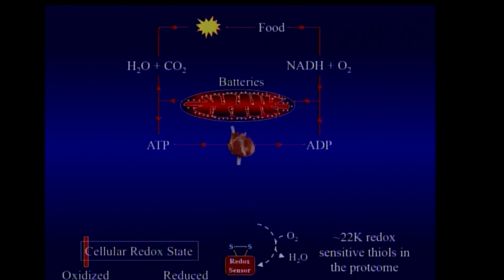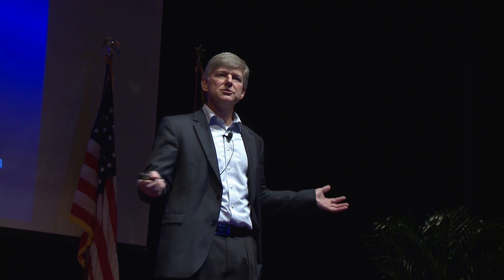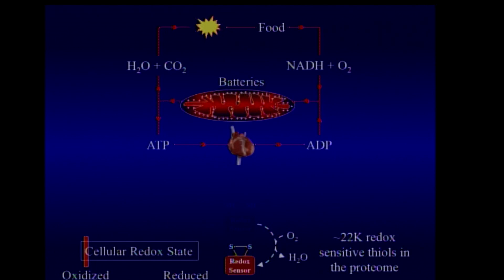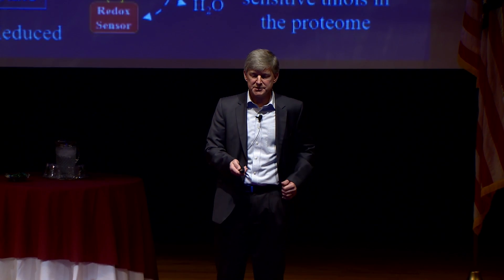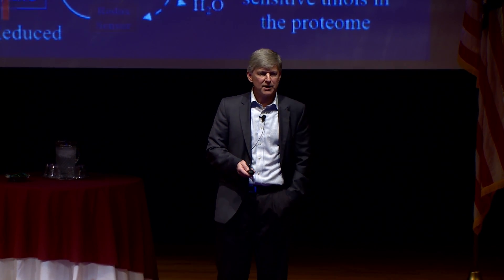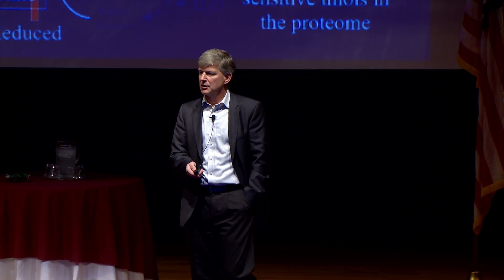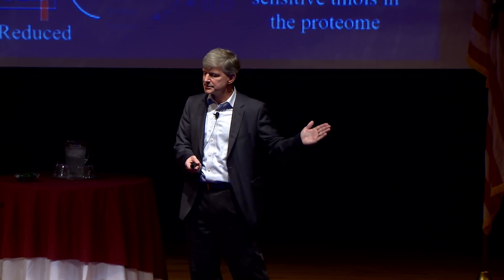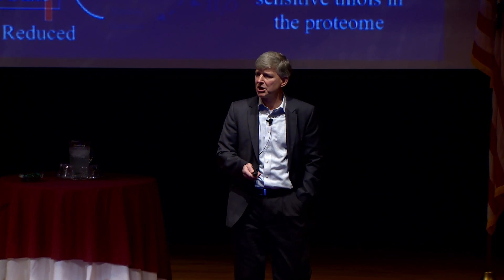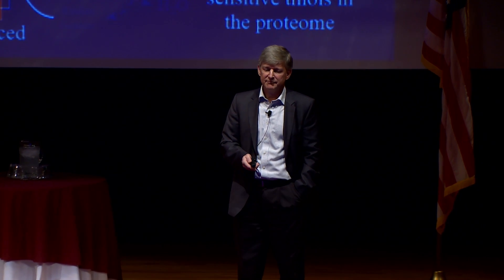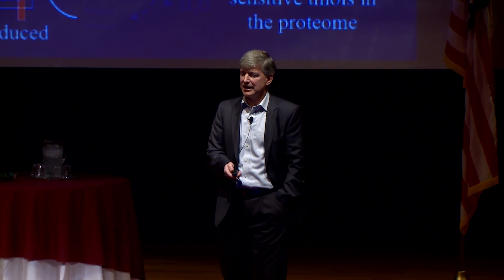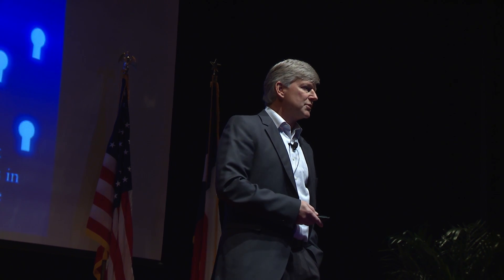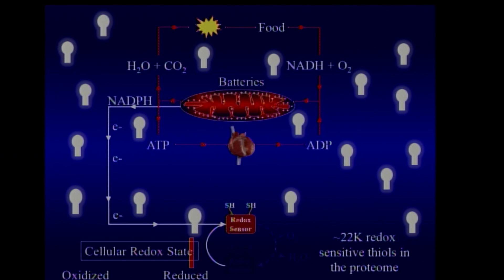Where are those electrons going? Our proteome inside the cell contains 22,000 redox-sensitive sulfur residues that can exist either as an oxidized or a reduced species. Because we live on a planet where oxygen is the default state and oxidation is the default state, to bring a cell to life requires generating an electrical circuit to reduce those redox-sensitive thiols. The cell moves, if you're starting from scratch, from 100% oxidized to 90% reduced. It's like turning on a light bulb inside the cell — in fact, like turning on thousands and thousands of light bulbs.